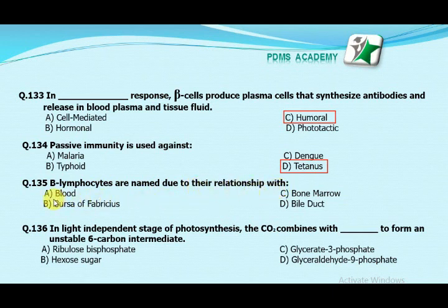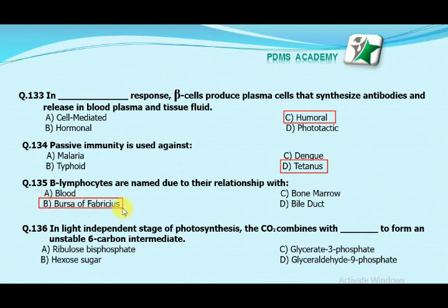Our next MCQ is: beta lymphocytes are named due to their relationship with — Option A: blood. Option B: bursa of fabricius. Option C: bone marrow. Option D: bile duct. Our correct answer is B, bursa of fabricius.